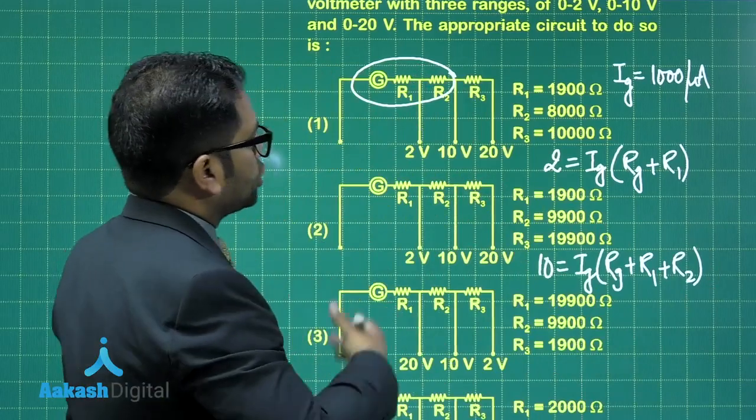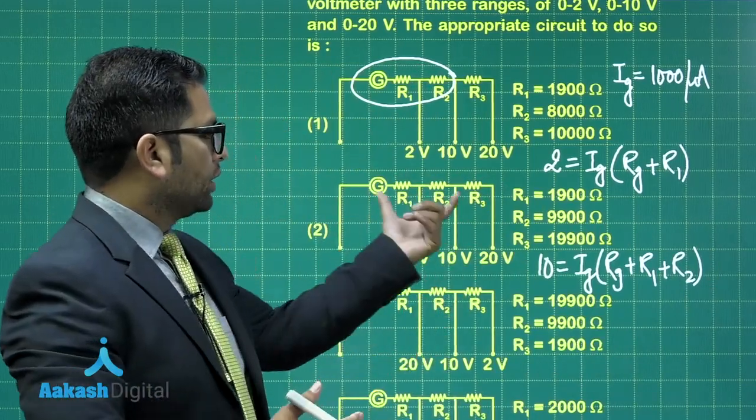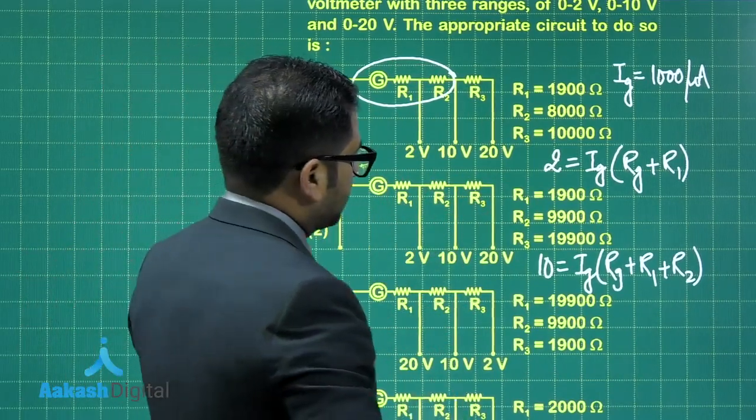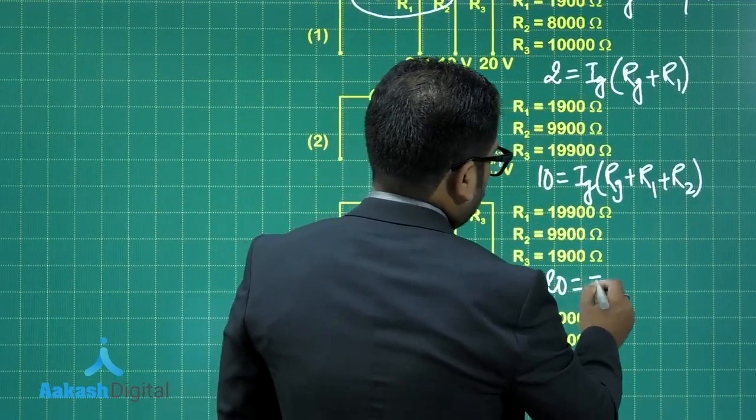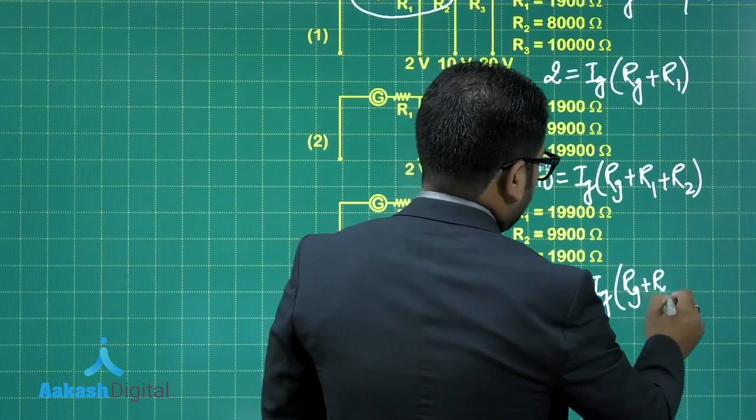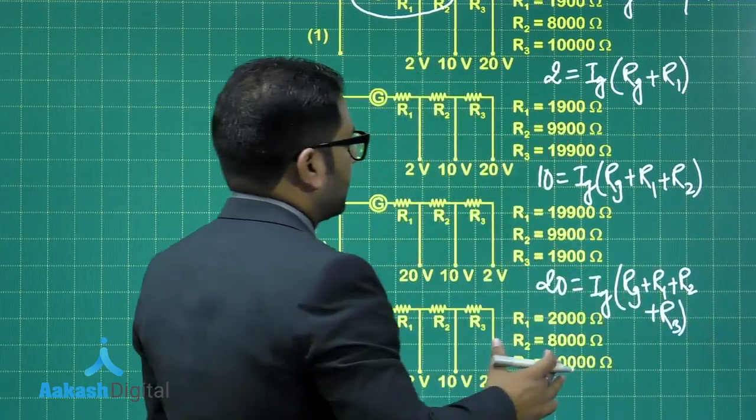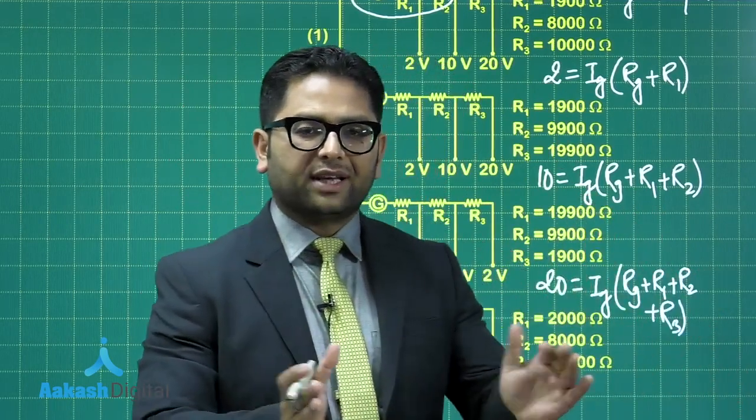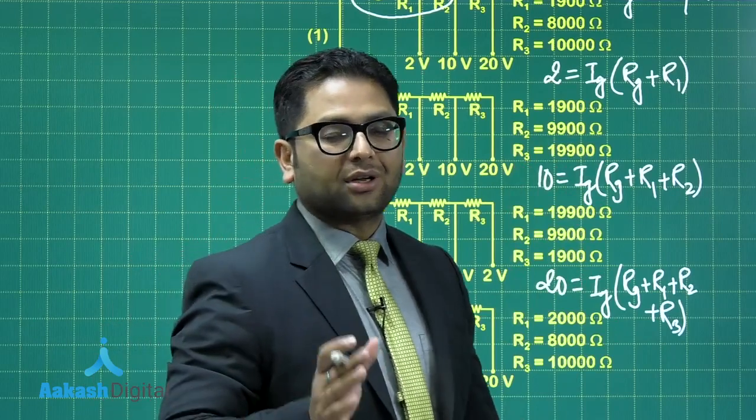And likewise for 20, 20 would be the entire one where all the three resistors and, of course, the galvanometer resistance would be included. So there I get 20 will be equals to IG into RG plus R1 plus R2 plus R3. So here I have RG, R1, R2, R3, all these things. And from these equations, we can calculate the value. That is all I require.